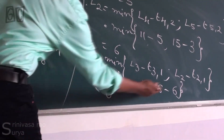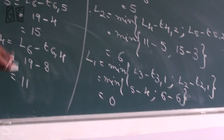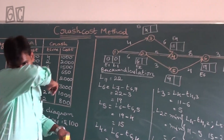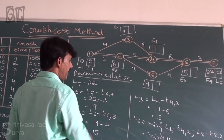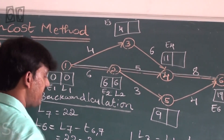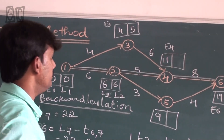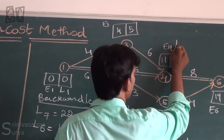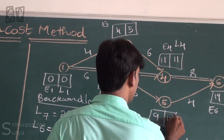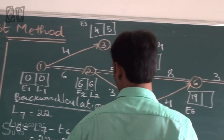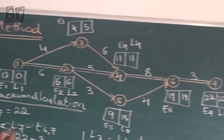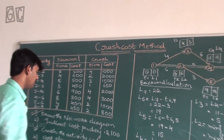For L1, the forward value is 0 and the backward calculation also gives 0. Summary of backward values: L2=6, L3=5, L4=11, L5=15, L6=19, and L7=22. These are all the backward calculations.